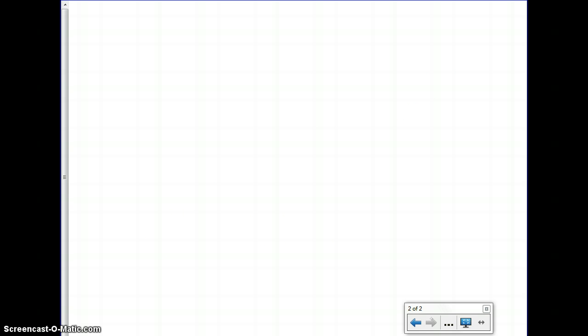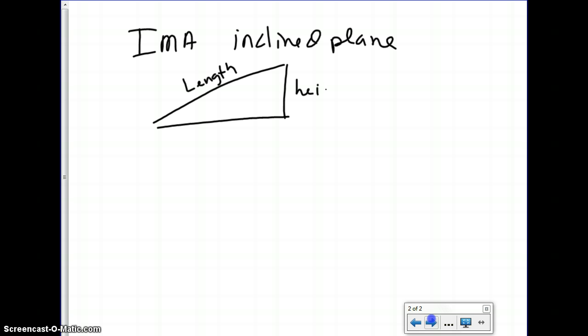Now if we want to take the IMA of an inclined plane, inclined planes are just called ramps. What we're looking at is the ratio or the relationship between the length of the ramp and its height. So if we're looking at the IMA of this, it's going to equal the length divided by the height.